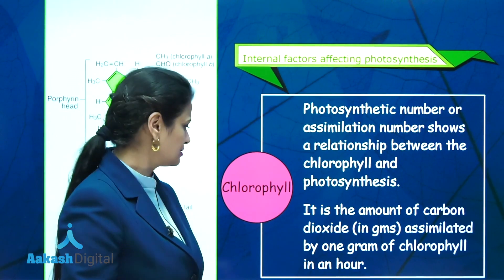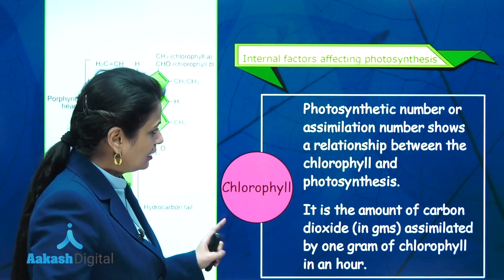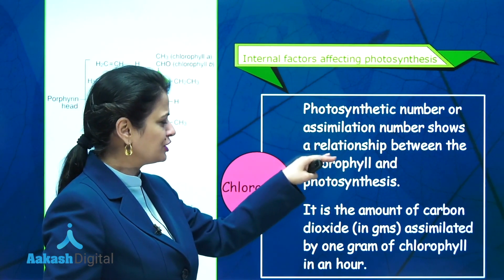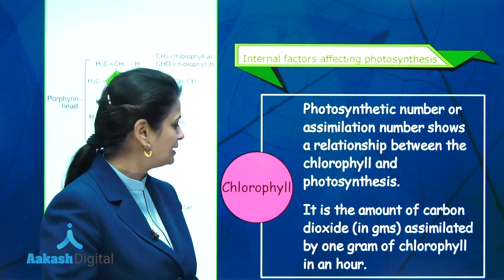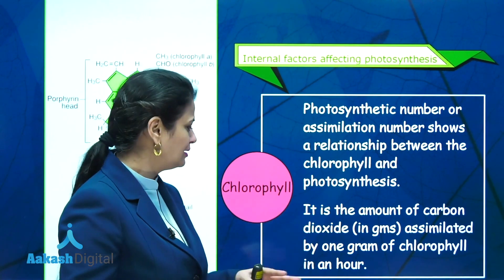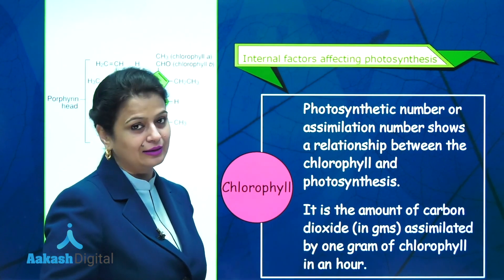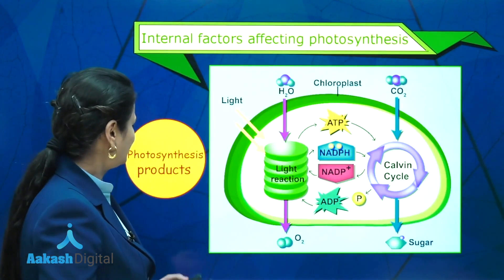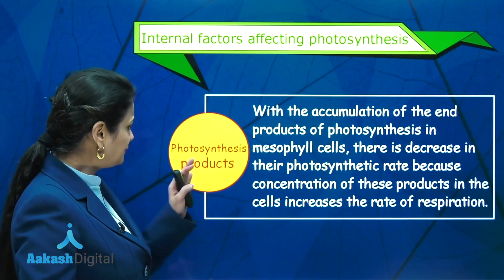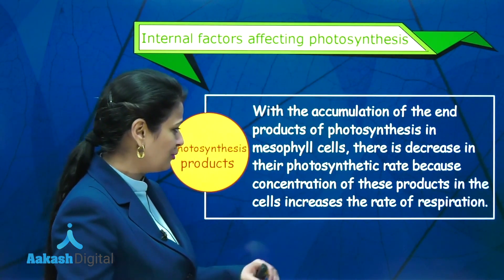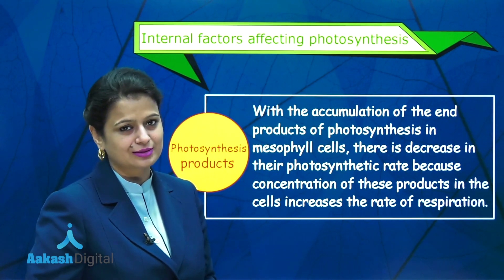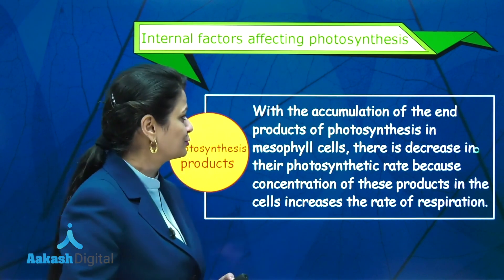Now we discuss internal factors. The first internal factor is chlorophyll. The photosynthetic number, also called the assimilation number, shows the relationship between chlorophyll and photosynthesis. The photosynthetic number is the amount of carbon dioxide fixed in grams by one gram of chlorophyll in one hour. The second internal factor is photosynthetic products. If there is accumulation of photosynthetic products, the rate of respiration increases, and this is going to decrease the rate of photosynthesis.